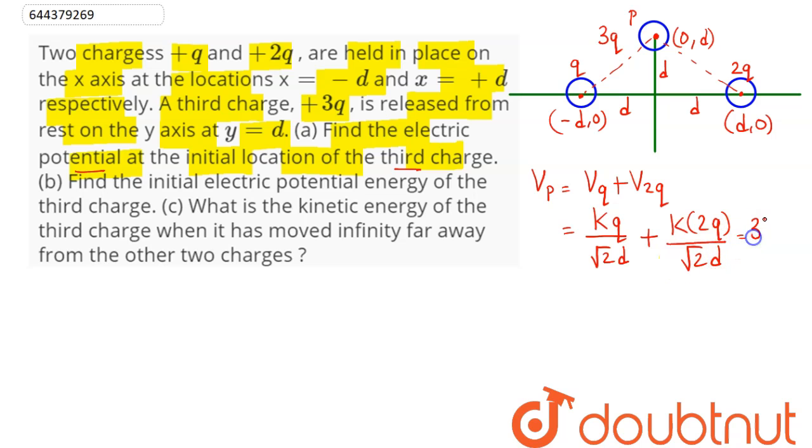So, this comes as k into 2q divided by root 2d. Hence, this comes to be 3kq divided by root under 2d. Hence, this is our first part answer.